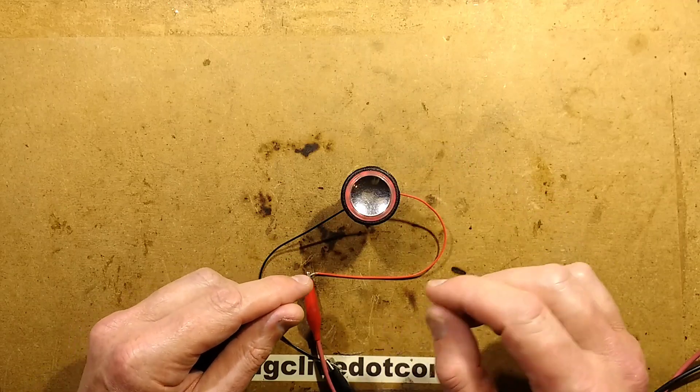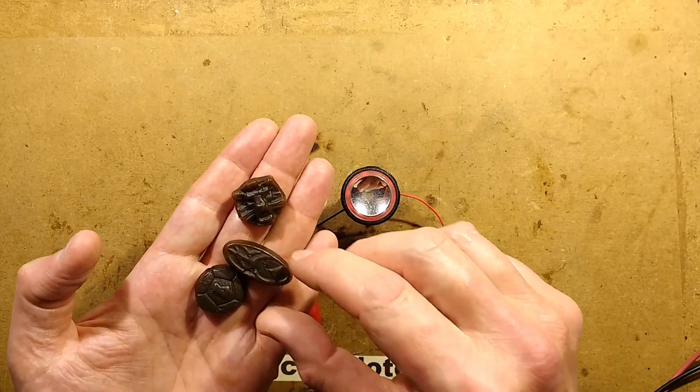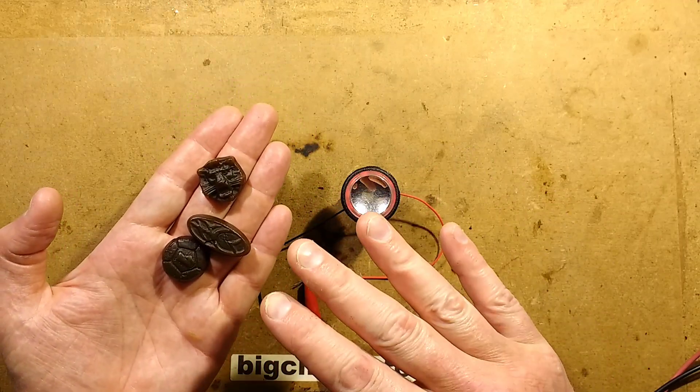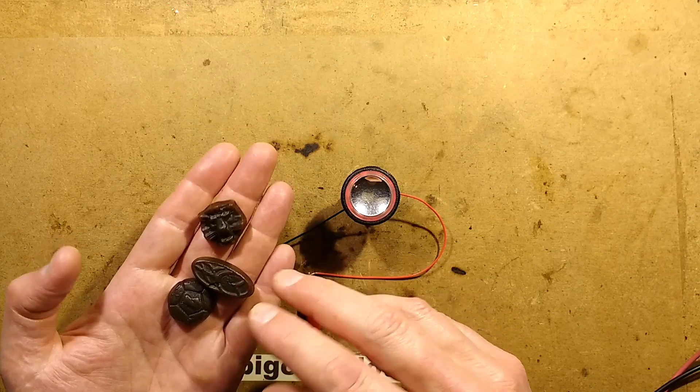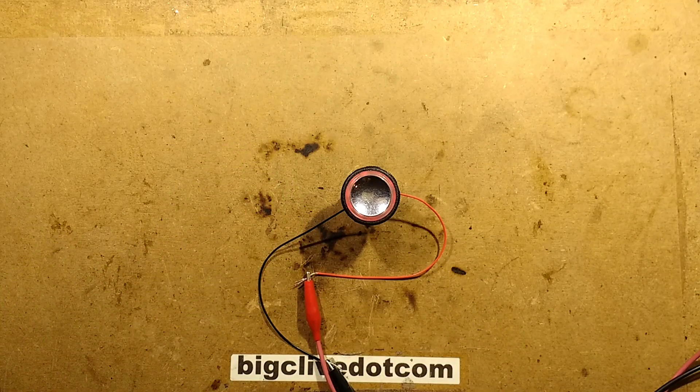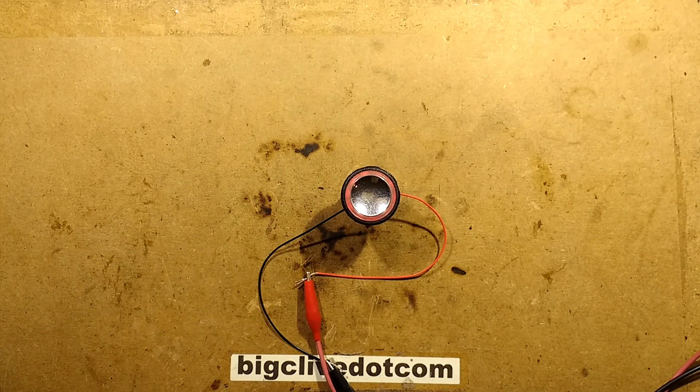He also sent me some Drup which is a popular Dutch licorice, quite often salty. This is quite nice stuff, it's more sweet than salty that version.